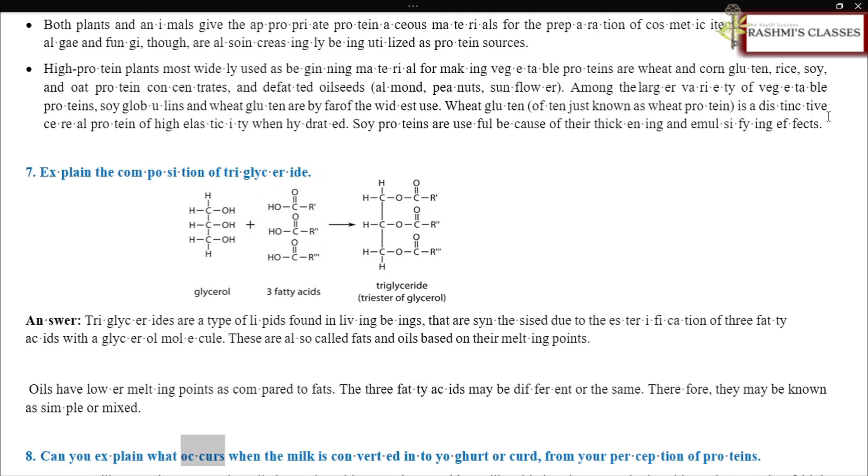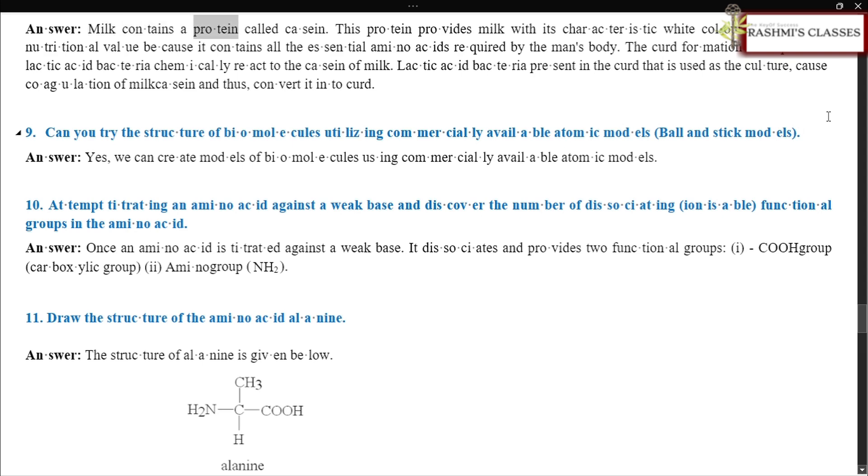Can you explain what occurs when the milk is converted into yogurt or curd from your perception of proteins? Answer. Milk contains a protein called casein. This protein provides milk with its characteristic white color. It is of high nutritional value because it contains all the essential amino acids required by the man's body. The curd formation takes place as lactic acid bacteria chemically react to the casein of milk. Lactic acid bacteria present in the curd that is used as the culture cause coagulation of milk casein and thus converted into curd.